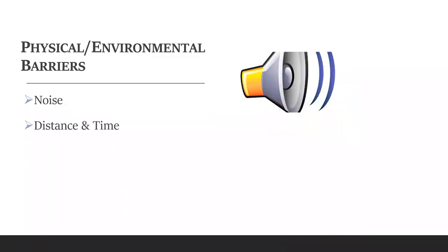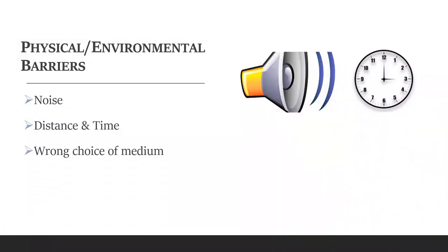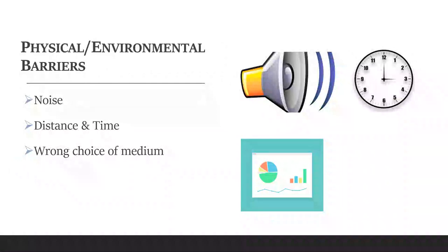The next one is distance and time, covered under environmental or physical barriers. Distance and time may obstruct the flow of communication, but thanks to today's technology we have kind of overcome this barrier. Time-related barriers may also be associated with the difference in time zones between two different countries or for people working in two different shifts. The next one is wrong choice of medium — imagine the medium used for communication is not suitable for the context. For example, using complicated charts or graphs to explain a simple concept of animals to tiny toddlers — they will not understand it, and it will definitely act as a barrier to communication.